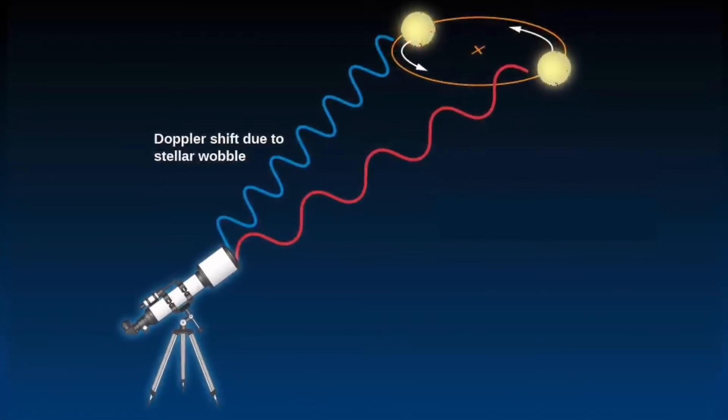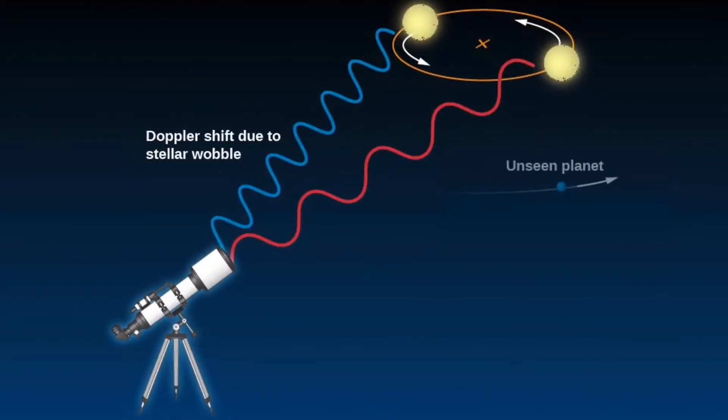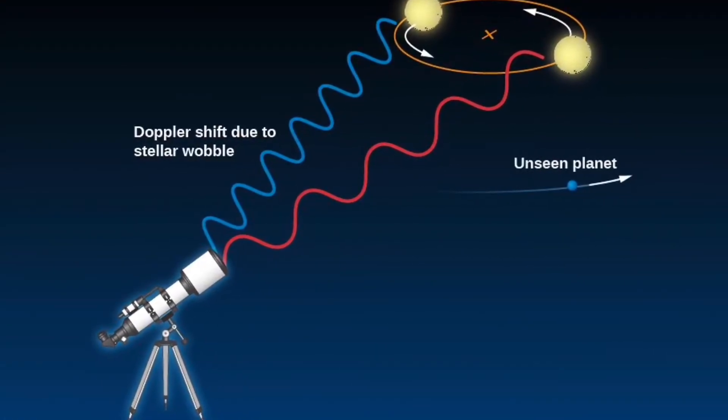If a star appears to be moving in an orbit like this one, there may actually be an unseen planet near it that is yet to be discovered.